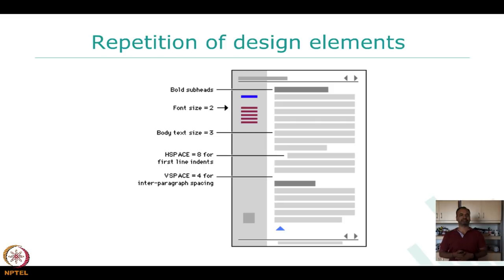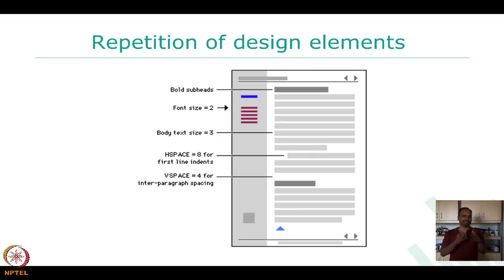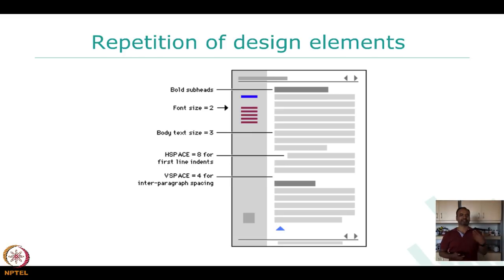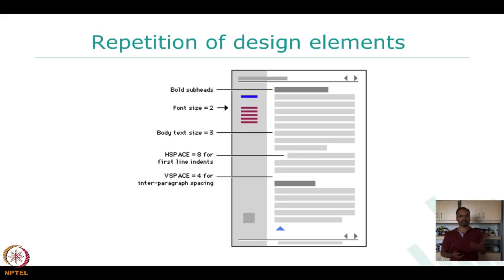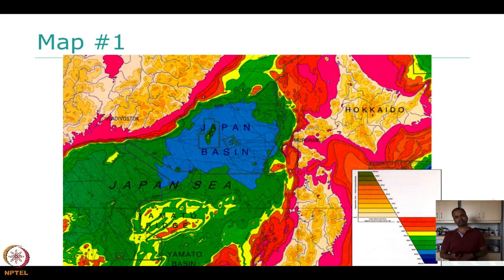Repetition of design elements — think of Microsoft Word, or even a research paper. A section looks different from a subsection, which looks different from a sub-subsection. Repetition of fonts, repetition of document structure, is necessary for people to quickly find what they need. Figures are kept differently, tables are kept differently — all of that is repetition of design elements.